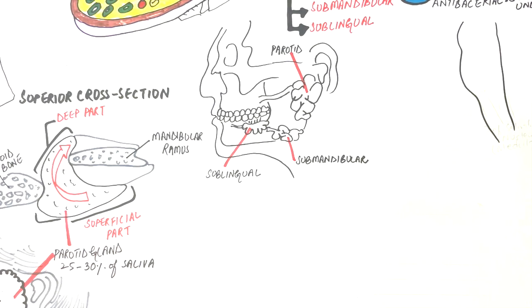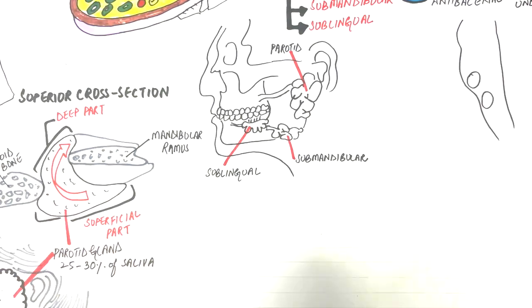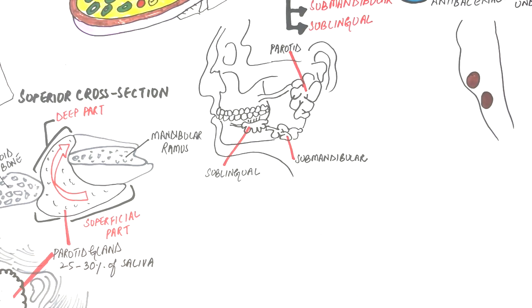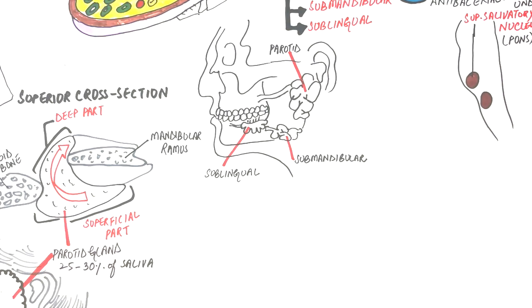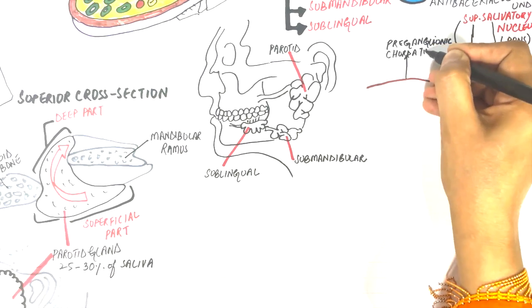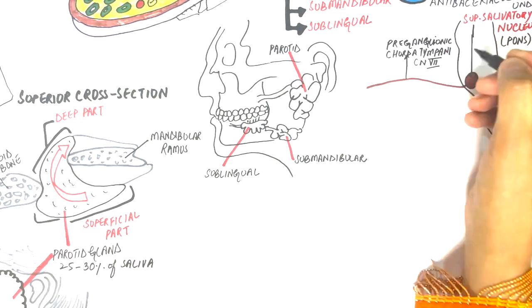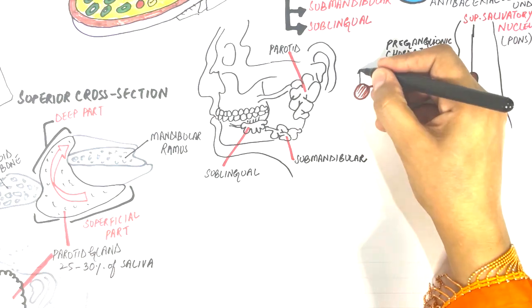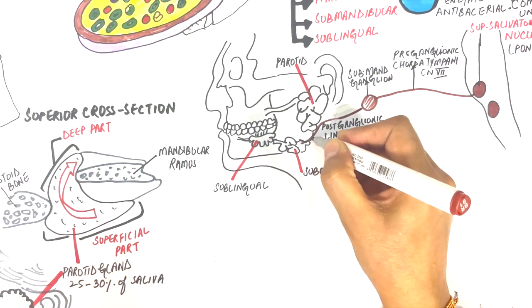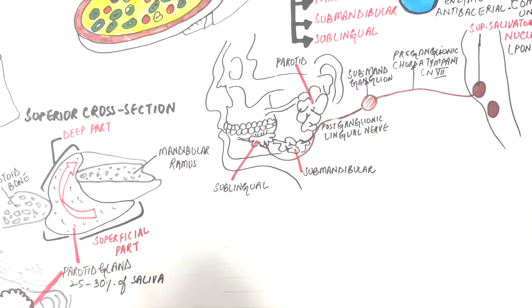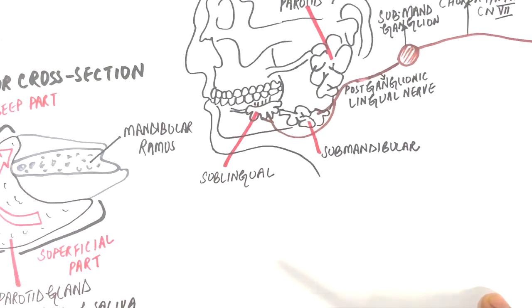For the submandibular and sublingual glands, the preganglionic fibers come from the superior salivatory nucleus in the form of chorda tympani nerve, a branch of the seventh cranial nerve or the facial nerve. Chorda tympani runs forward and synapses in the submandibular ganglion and innervates these two glands through the postganglionic fibers through the lingual nerve, which is a branch of the mandibular division of the trigeminal nerve.